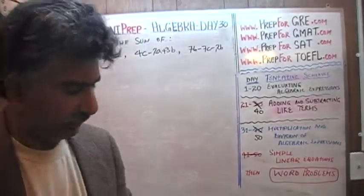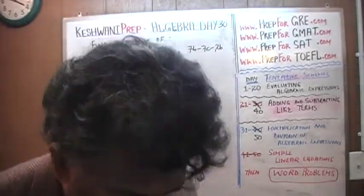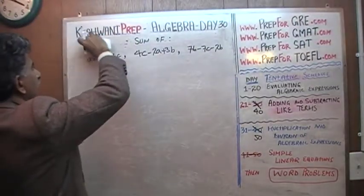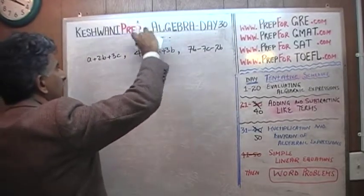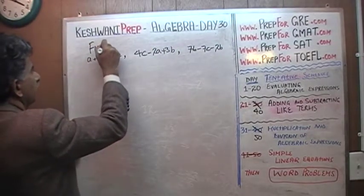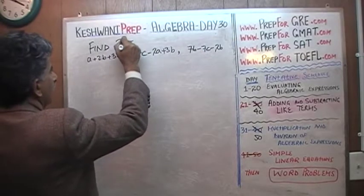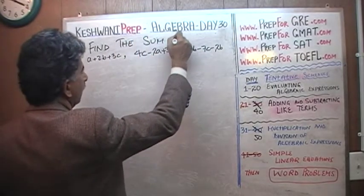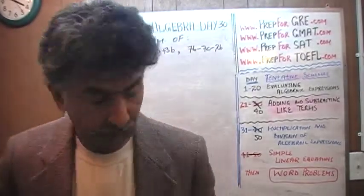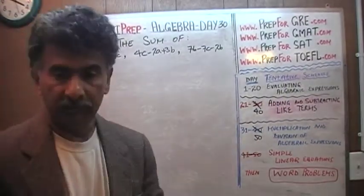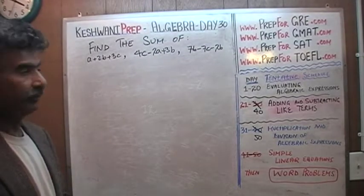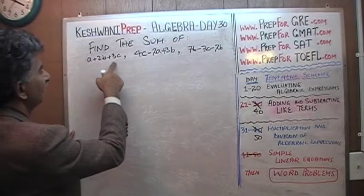The very first problem is on the blackboard. We are asked to find the sum of these three expressions. If you've been watching the videos from day number 21, you know what it means to combine like terms. In order to add these three expressions, we have to line up the like terms together. Here we have a plus 2b plus 3c.